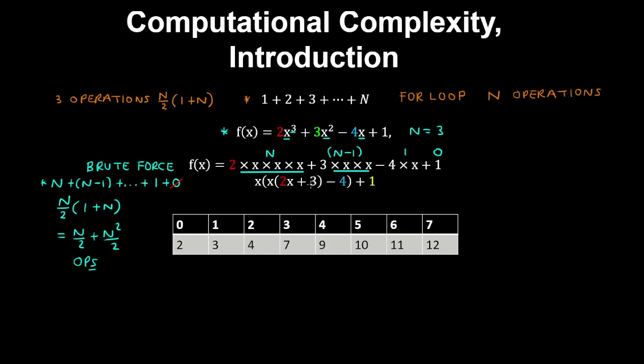The other method is to use Horner's algorithm. Here we have one multiplication, another multiplication, and three multiplications. Therefore, using Horner's algorithm, we have n operations. Horner's algorithm is a lot more efficient than using brute force.